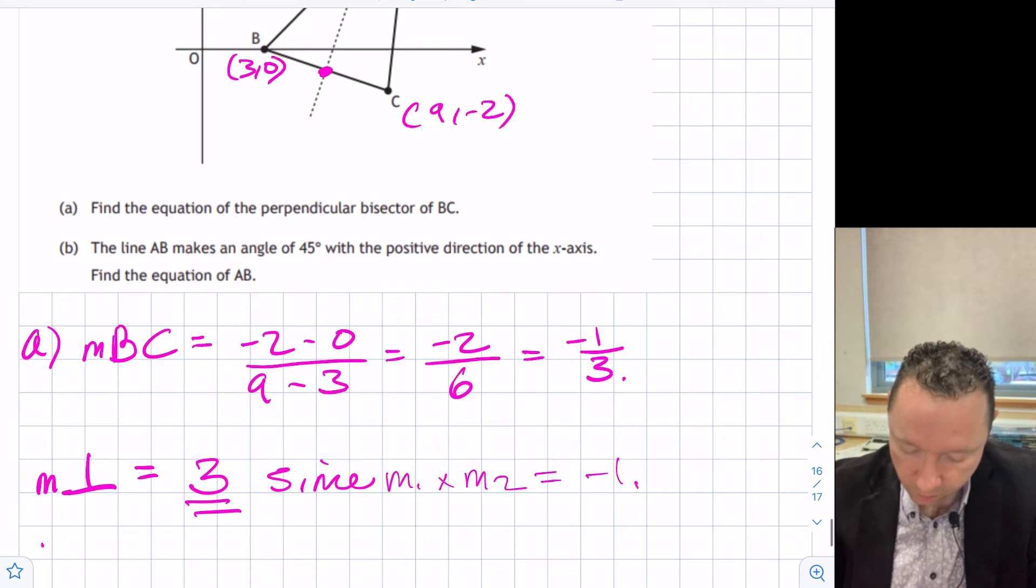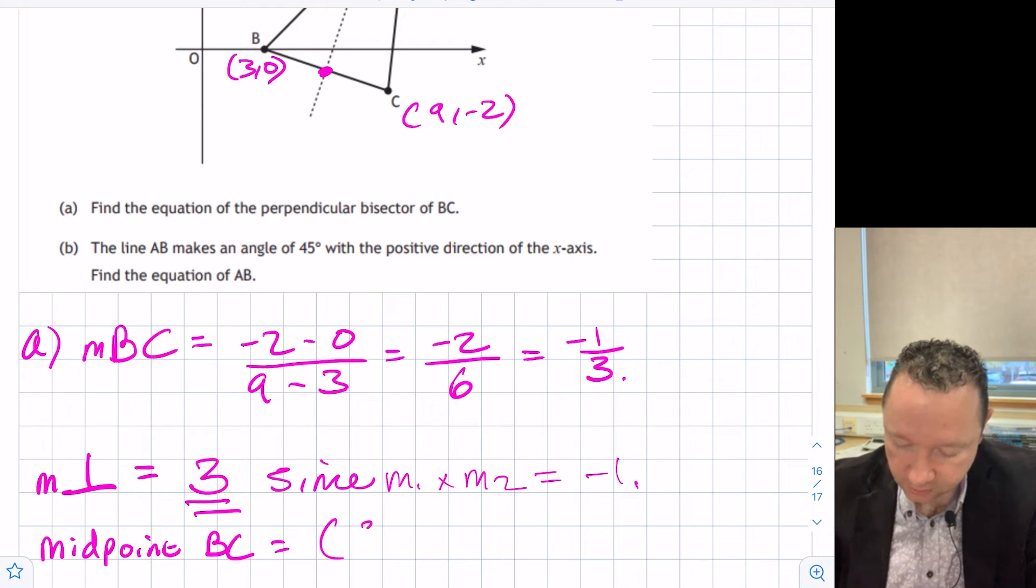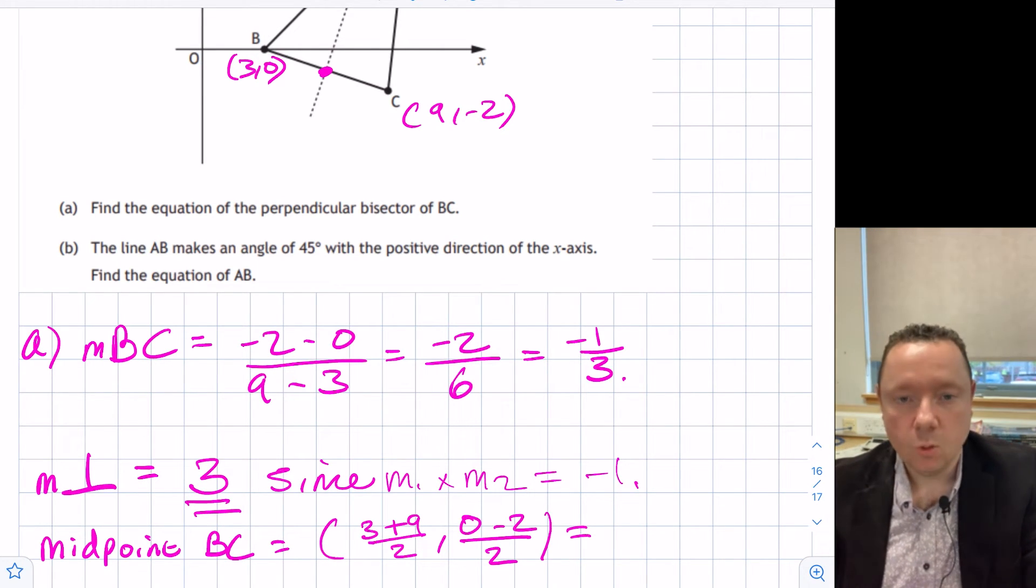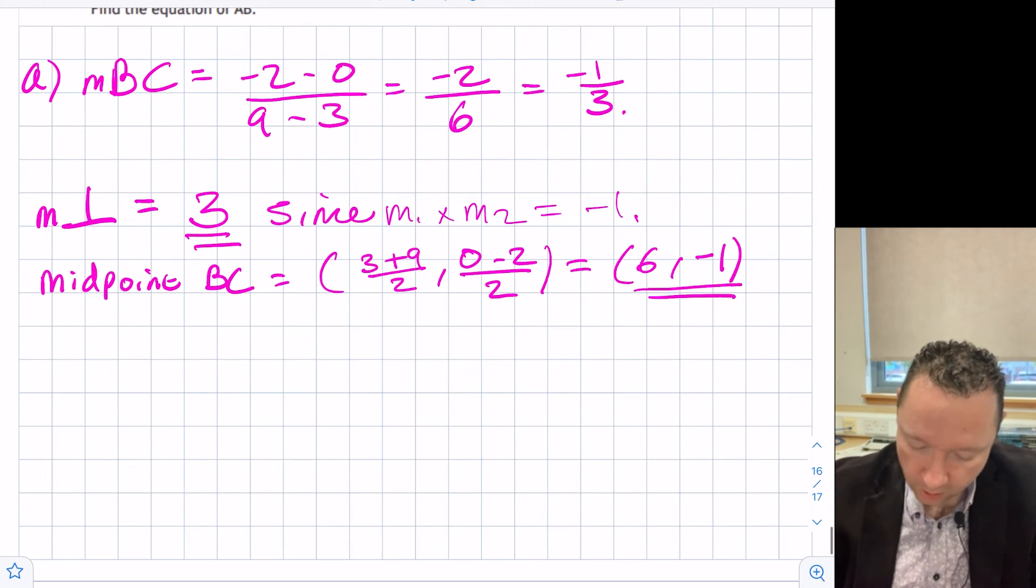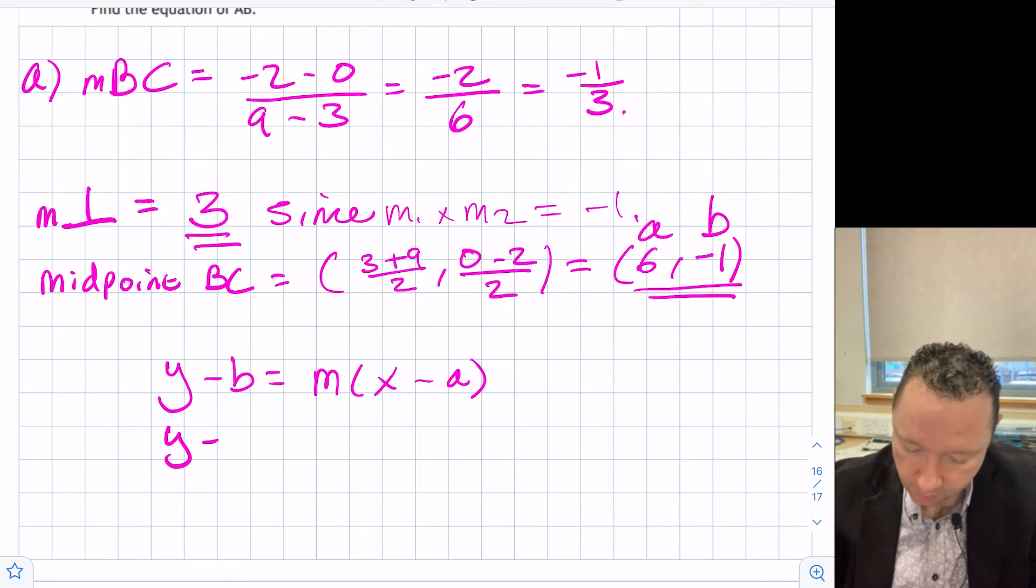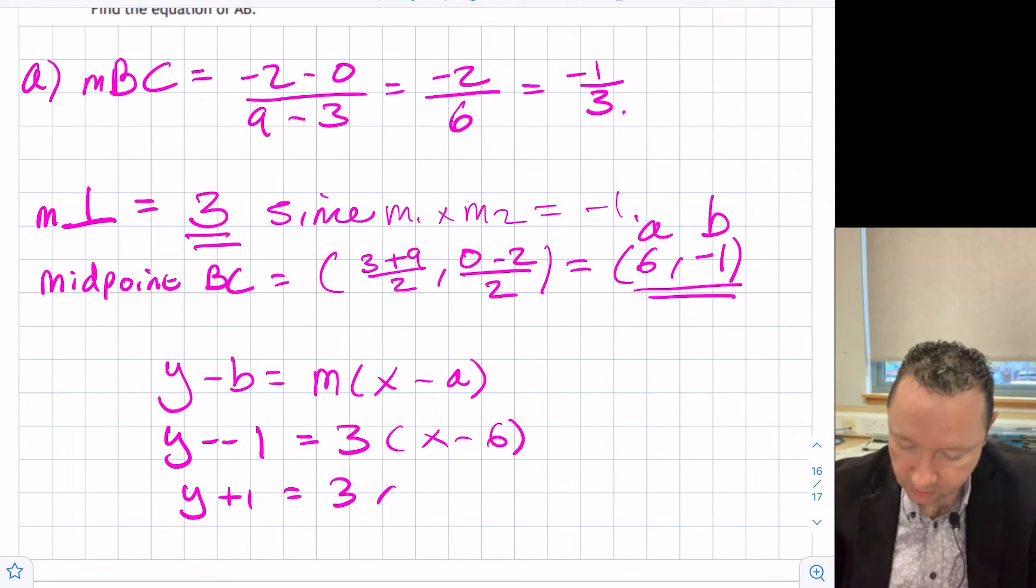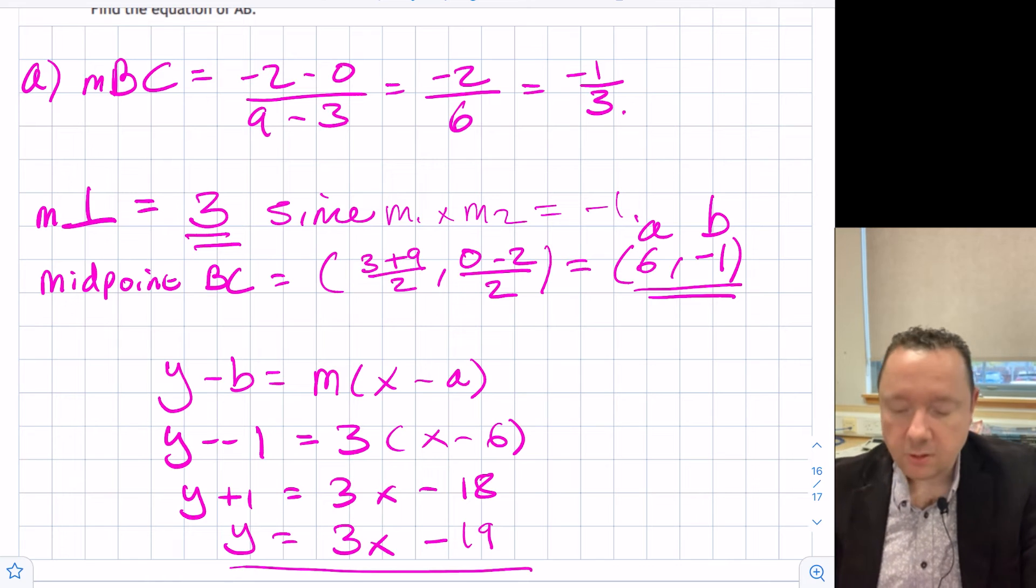We now need the midpoint. The midpoint of BC is equal to the average of the x's, 3 plus 9 divided by 2, and the average of the y's, 0 minus 2 divided by 2. 3 plus 9 is 12 divided by 2 is 6. 0 minus 2 is negative 2 divided by 2 is negative 1. We've now got all the information we need. Using y minus b equals mx minus a, y minus minus 1 is equal to 3x minus 6. y plus 1 is 3x minus 18. Or to put it a nicer way, y equals 3x minus 19.